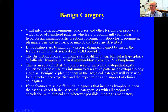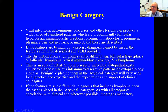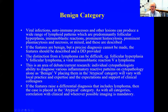The benign category includes viral infections, autoimmune processes, and other lesions that can produce a wide range of lymphoid patterns — predominantly follicular hyperplasia, an immunoblastic reaction, prominent histiocytosis, prominent plasmacytosis, and necrosis, which may be mixed. If features are benign but a precise diagnosis cannot be made, the features should be described and a differential diagnosis provided. The distinction from lymphoma can be difficult — for instance, follicular hyperplasia may be difficult to distinguish from follicular lymphoma, and a viral immunoblastic reaction may be difficult to distinguish from immunoblastic lymphoma. Individual pathologists' ability to diagnose inflammatory reactive patterns as benign versus placing them in the atypical category will vary with local practice and expertise.